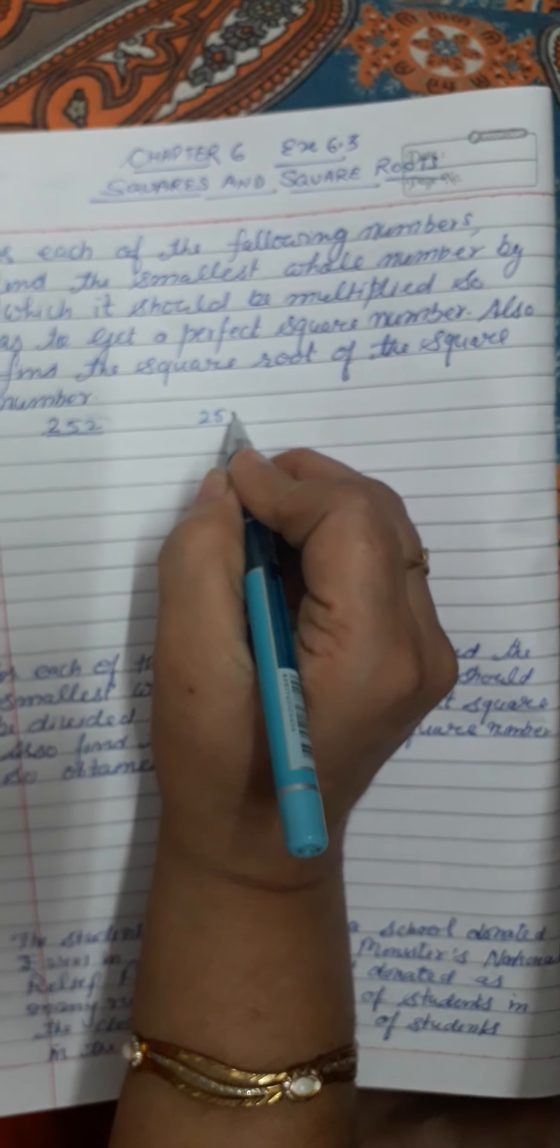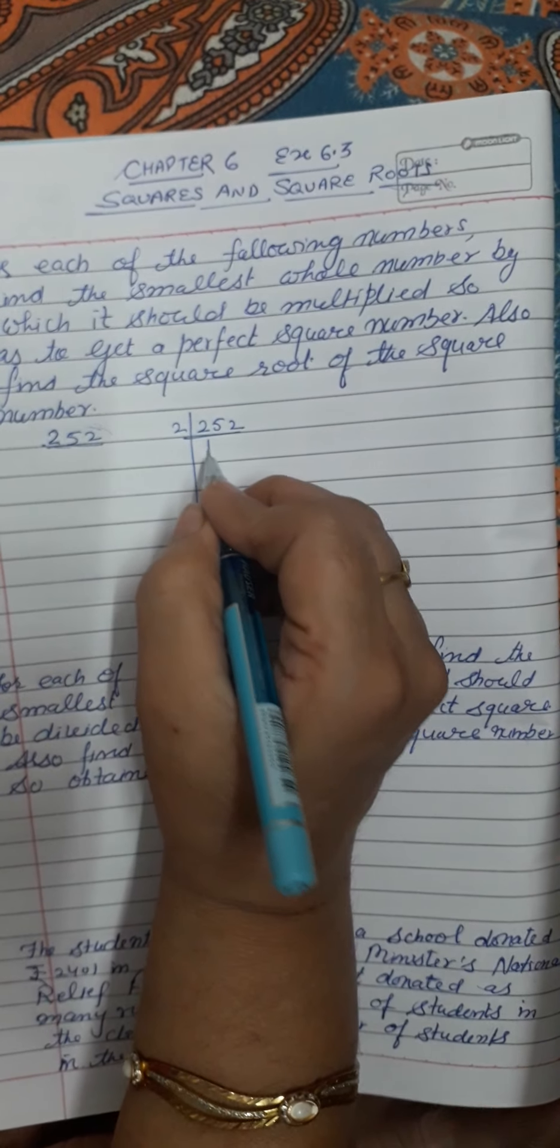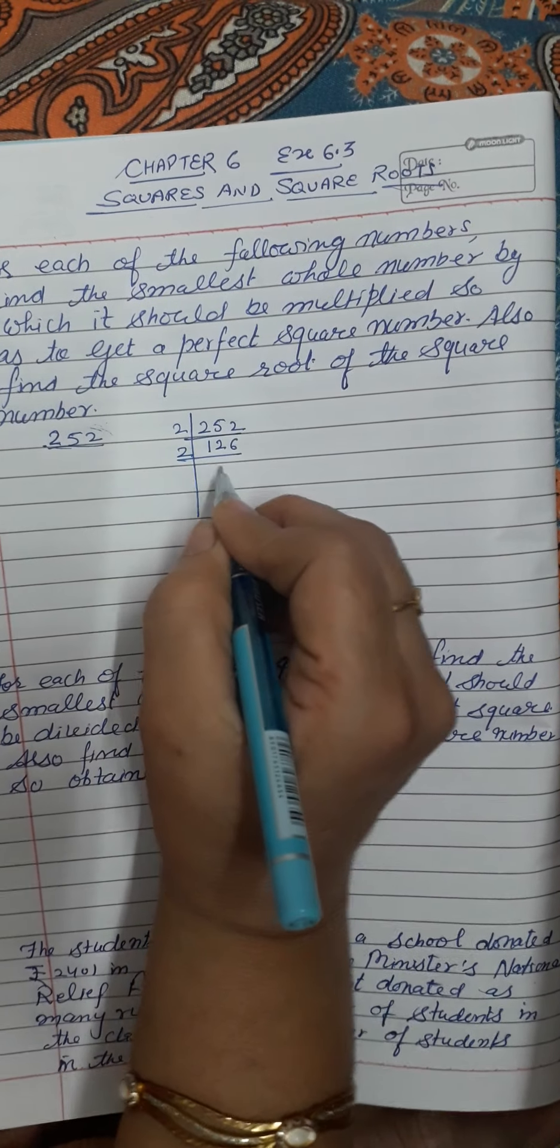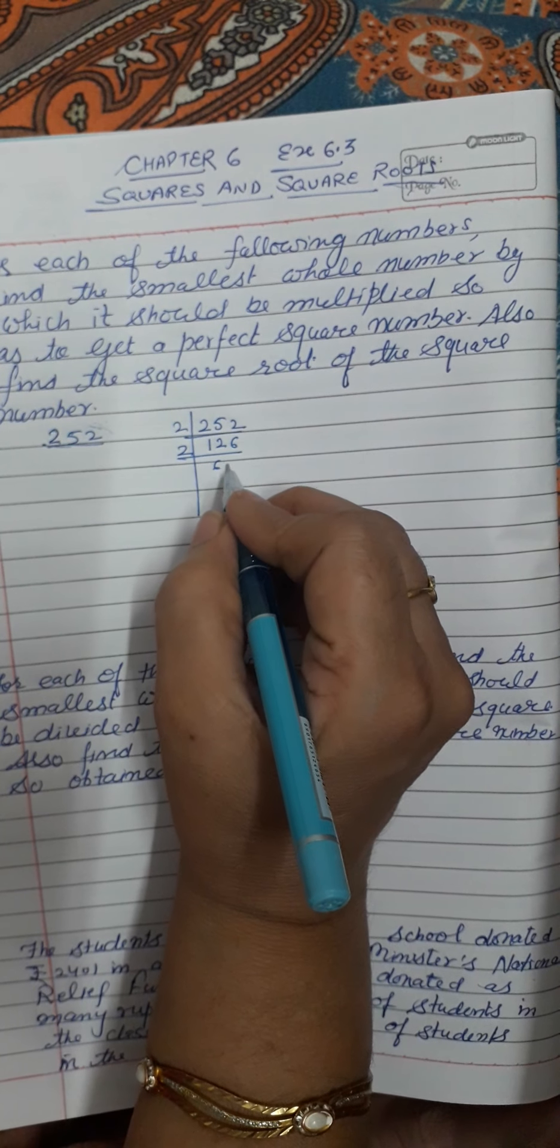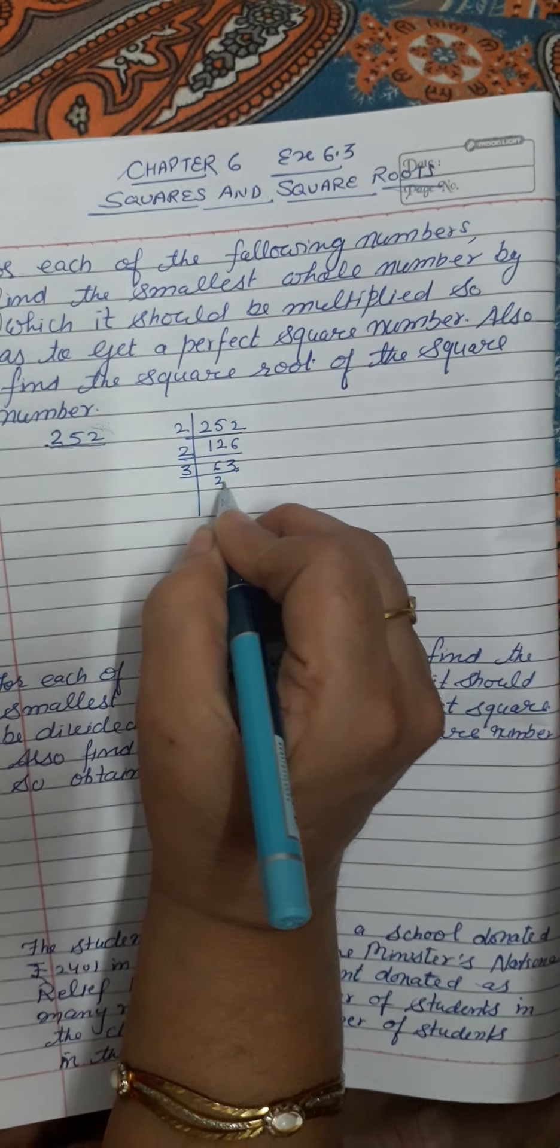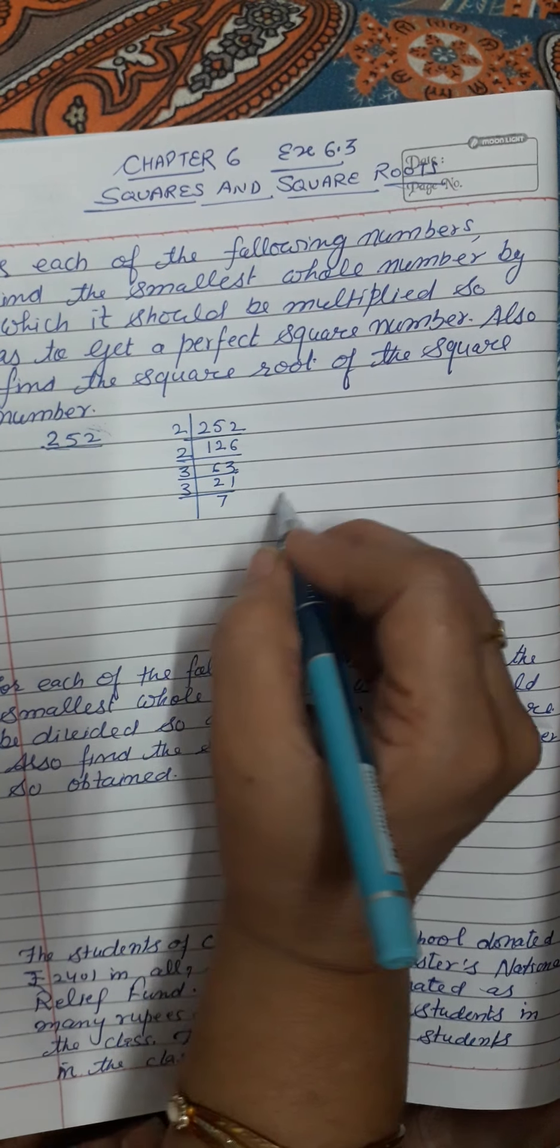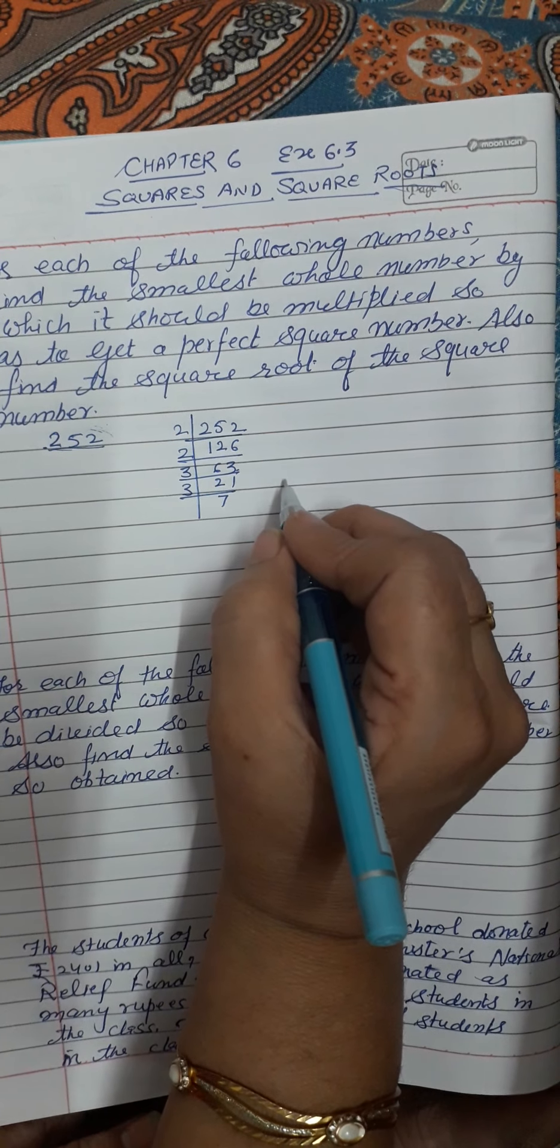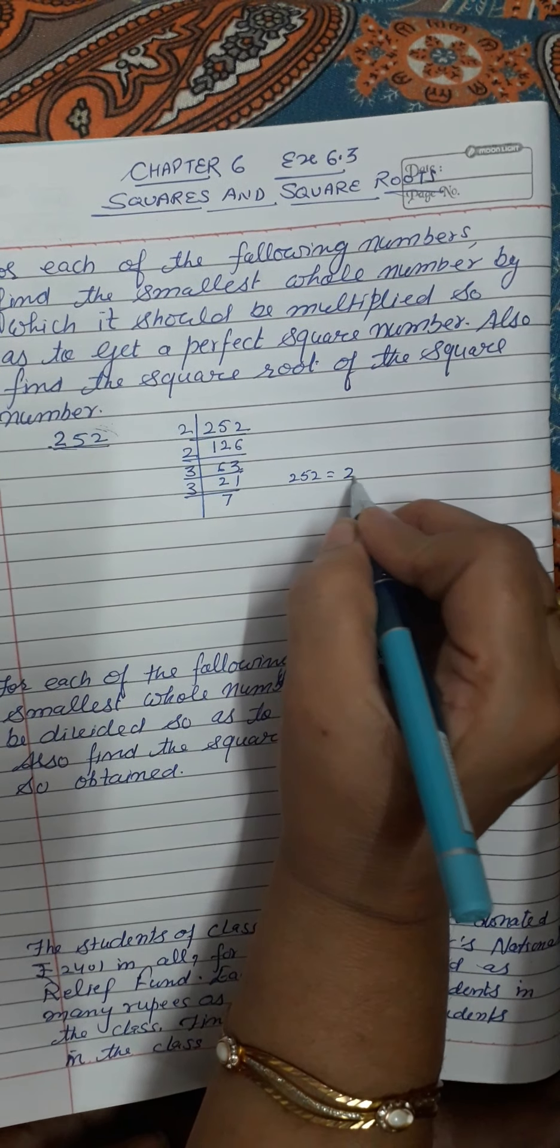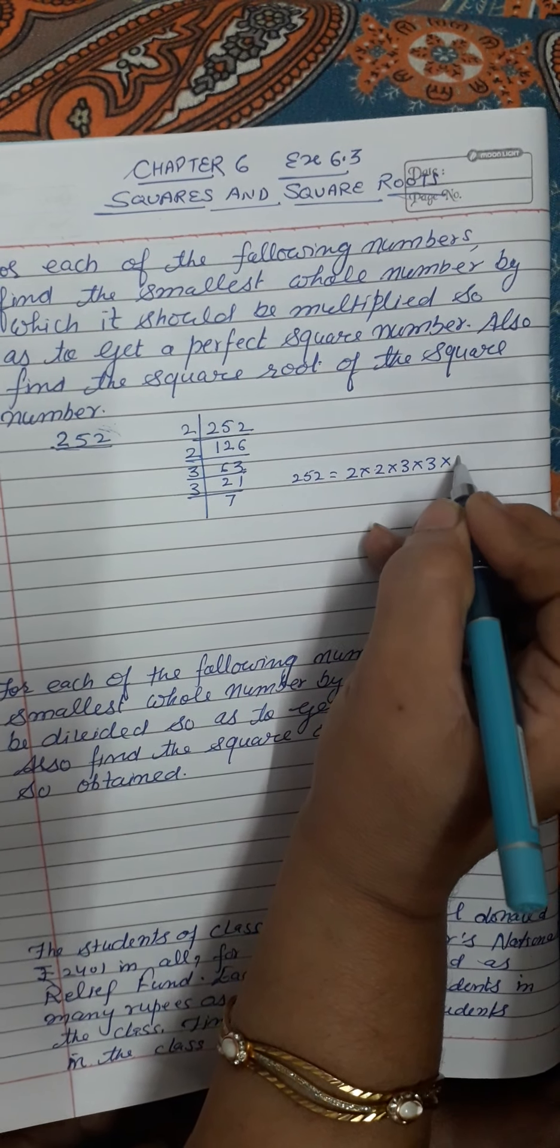The first step is we have to do the prime factorization of 252. First prime number 2: 1, 2, 6, and 6 again. 2 divides 6 to get 3. Now this is divisible by 3: 21. And again this is divisible by 3: 7. Now if we write 252 as a product of prime numbers, then this will become 2 × 2 × 3 × 3 × 7.